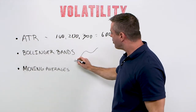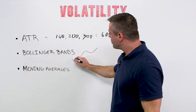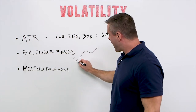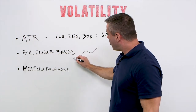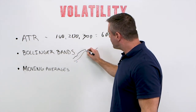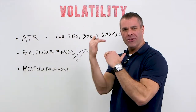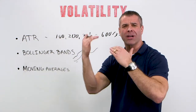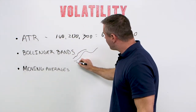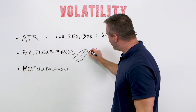When we plot Bollinger Bands on there, they will have a band above and a band below that will hug price. And when the volatility is low — when we go into a period of consolidation, when the market's not moving much — what will happen is the Bollinger Bands will start to tighten up.